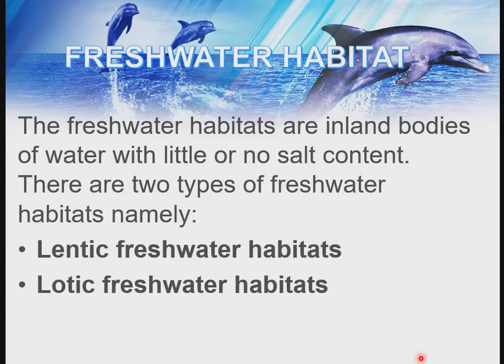There are two types of freshwater habitats: the lentic freshwater habitat and the lotic freshwater habitat. Lentic freshwater habitats are standing, stagnant, and calm water bodies — these include lakes, ponds, pools, and swamps. Lotic freshwater habitats are flowing fresh waters — these include springs, streams, and rivers.